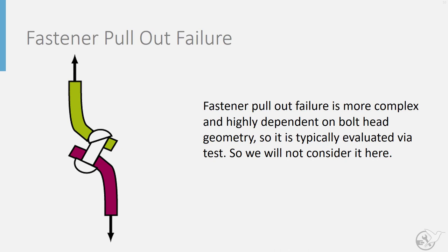The final failure mode is fastener pullout failure. However, this failure mode is much more complex and more difficult to develop an analytical model for, as it is highly dependent on the bolt head geometry — the shape of the bolt head has a huge influence on whether or not it gets pulled through the sheet. This is beyond what will be covered in this course. Typically you would look at test data, and you may have to add washers or use a different fastener head to prevent this failure mode if it is at risk of occurring.